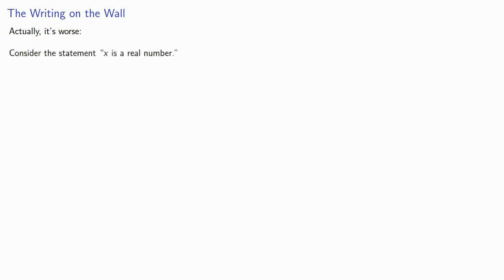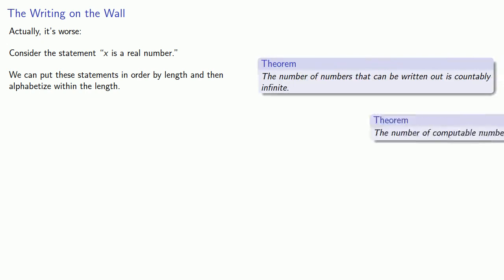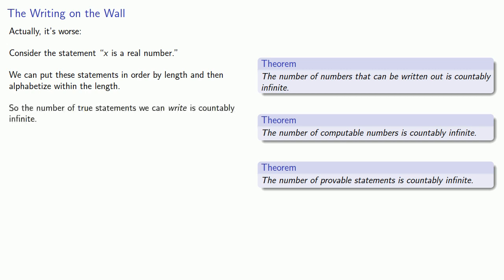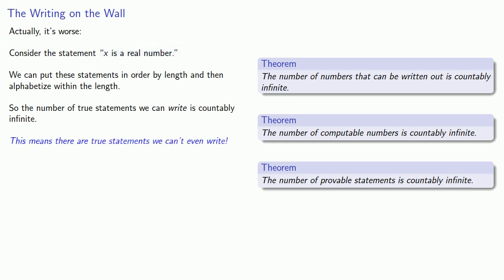Actually, it's worse. Consider the statement 'x is a real number' — this is a true statement. We can put such statements in order by length and then alphabetize them within the length. That's what we did to count the numbers we can write, compute, or the statements we can prove, and in every case we found the number of such statements was countably infinite. So the number of true statements we can write is countably infinite. But the number of true statements like this is uncountably infinite. This means there are true statements we can't even write.